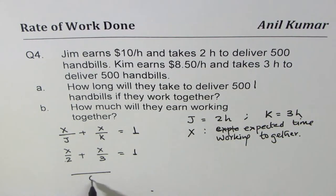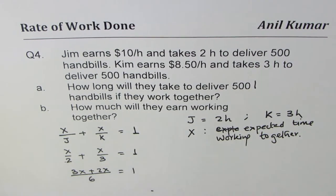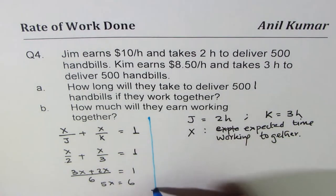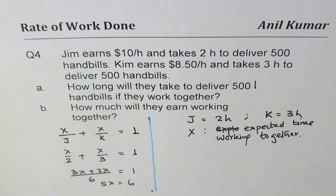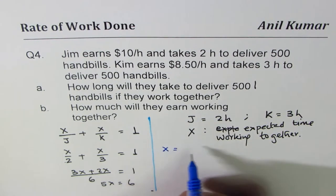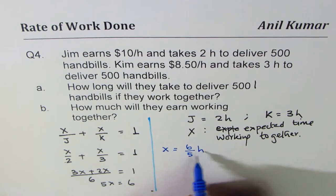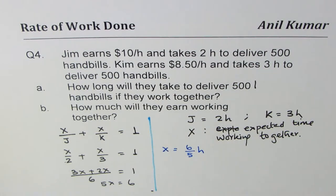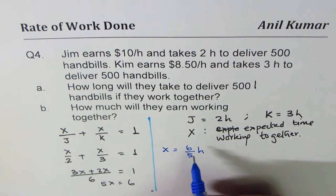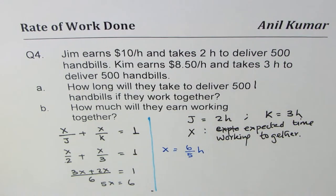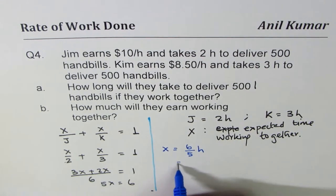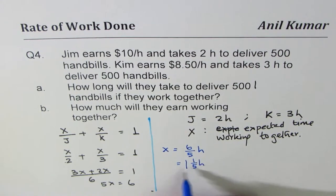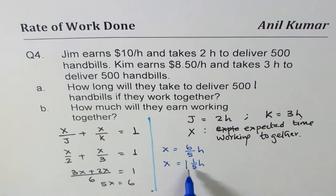Common denominator is six. So we get three x plus two x equals one, or we get five x equals six. And that gives you the value of x. From here, we find that x is equals to six over five hours, which is one whole one fifth of an hour. That's better. So that is the time which they are going to take.